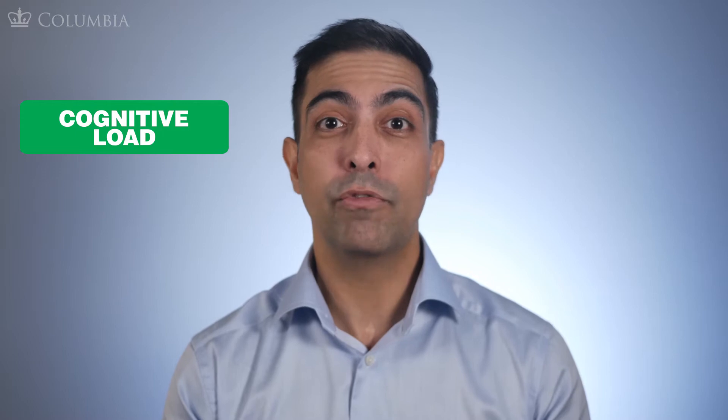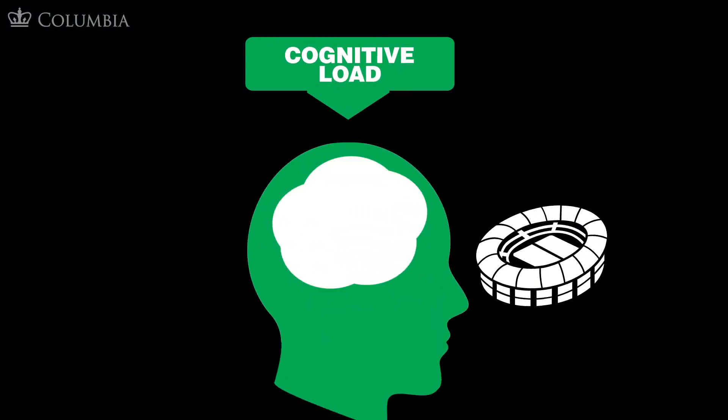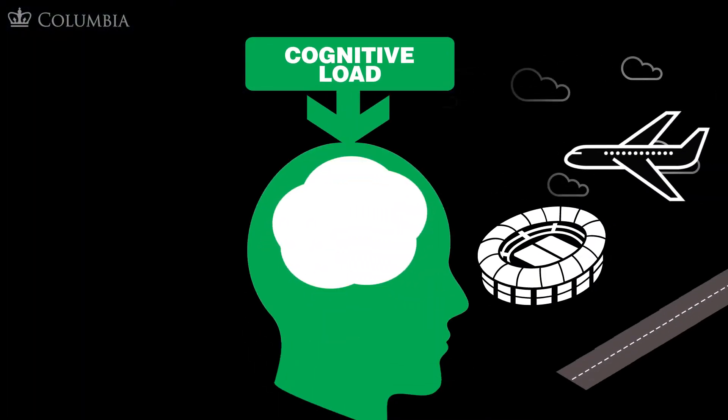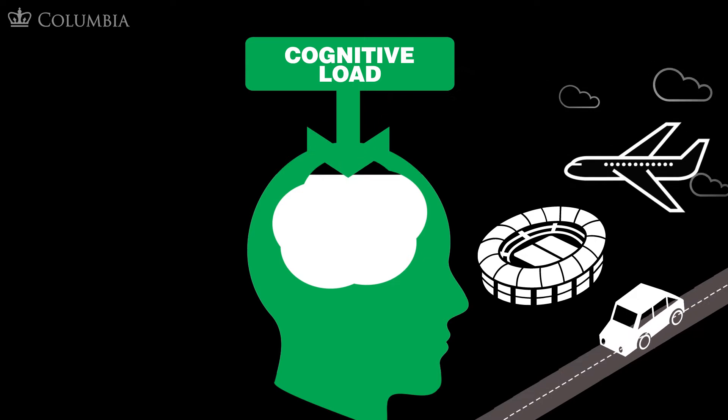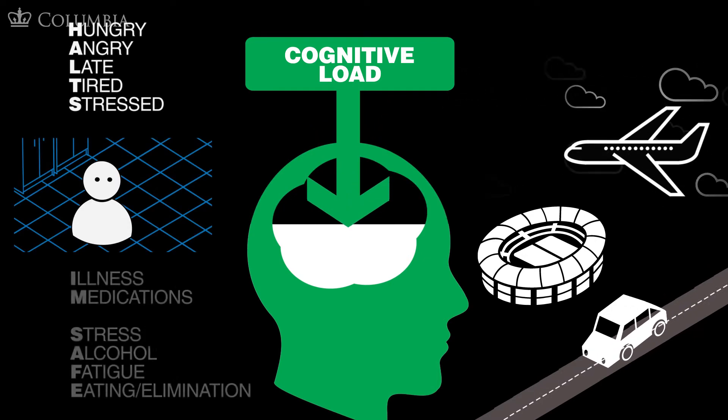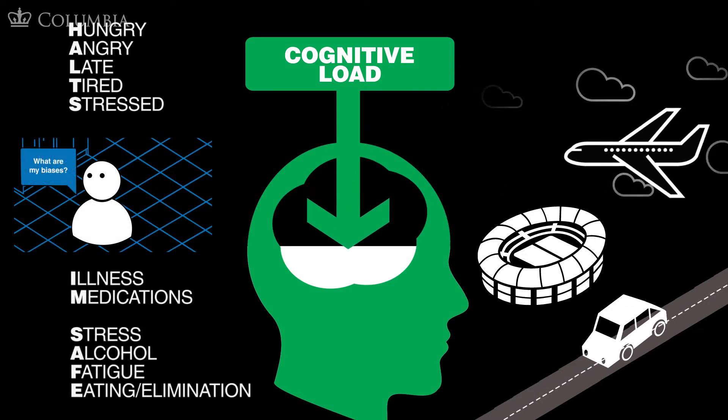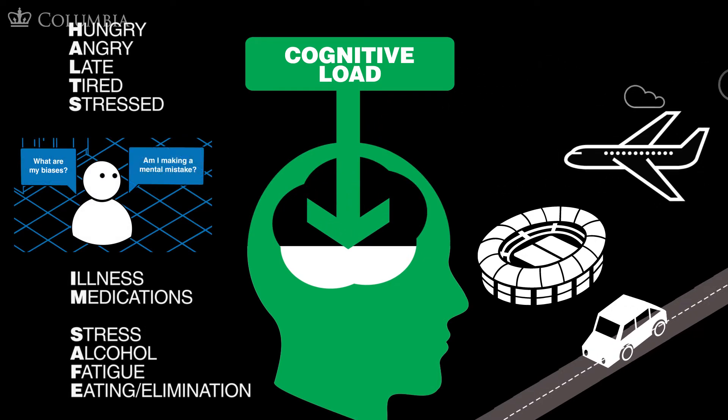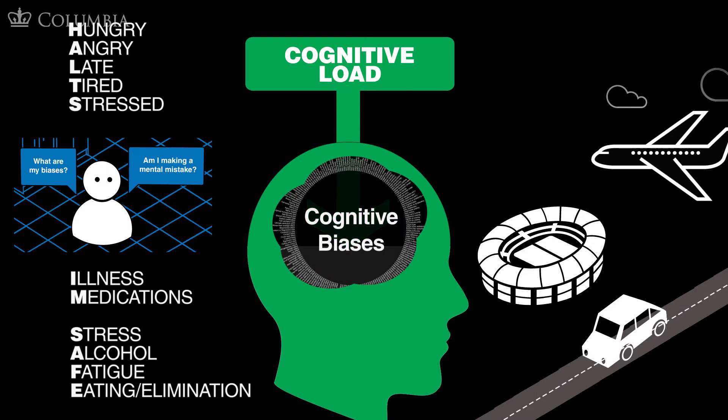The mental burden of processing multiple items of information at one time is referred to as cognitive load. Cognitive load is influenced by extrinsic factors such as the environment, and individual factors such as being hungry, angry, late, tired, or stressed, and cognitive biases.